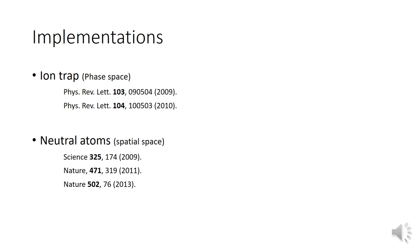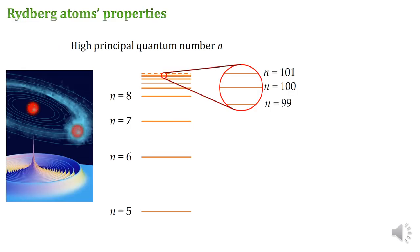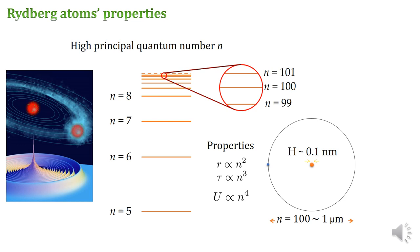The favorite strong interaction in neutral atoms is the Rydberg interaction. Rydberg atoms are highly excited atoms, typically to 100 principal number. They are huge in size, where the radius is scaled with n-squared. The reduced overlap of the wave function with the core results in longer lifetime, scaled with n-cubed, and the exchange interaction among them scales with n to the power of 4.